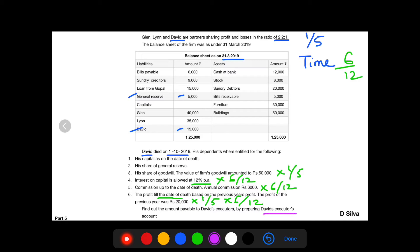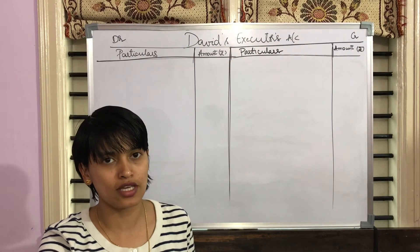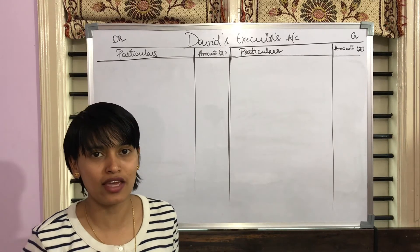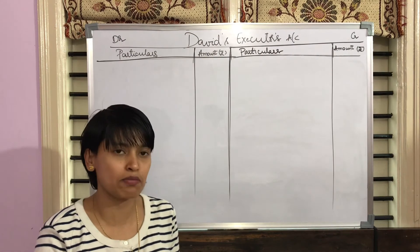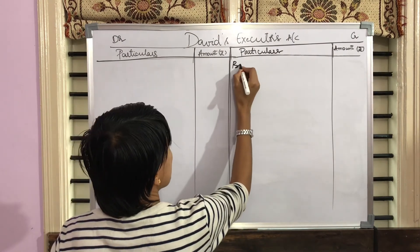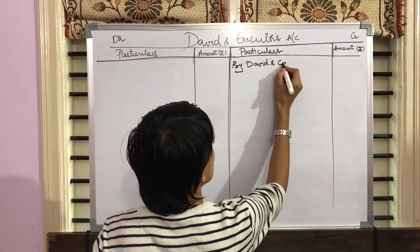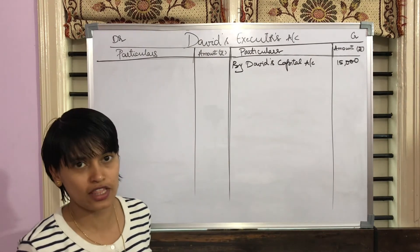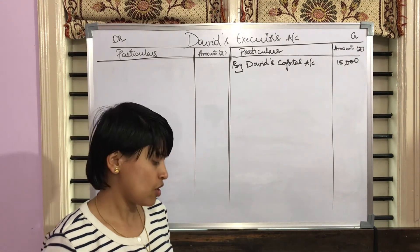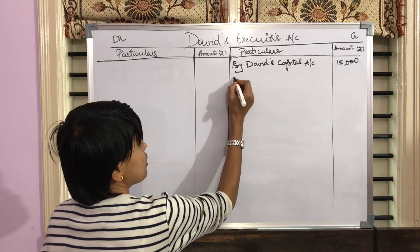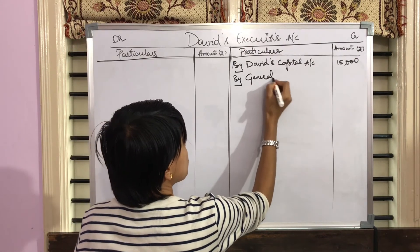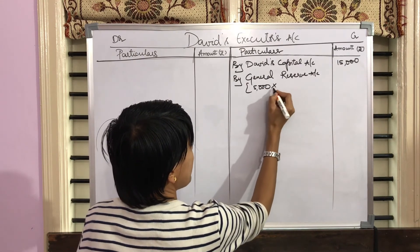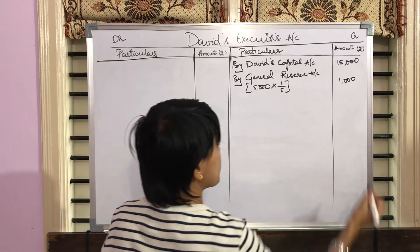For the preparation of David's executor's account — in a previous video I have explained how to prepare the executor's account. First and foremost, we need to show the deceased partner's capital, written as 'By David's Capital Account' — amount given in the balance sheet is Rs. 15,000. The second point, his share of general reserve: 'By General Reserve Account' Rs. 5,000 — David's share is 1 by 5, so the amount will be Rs. 1,000.